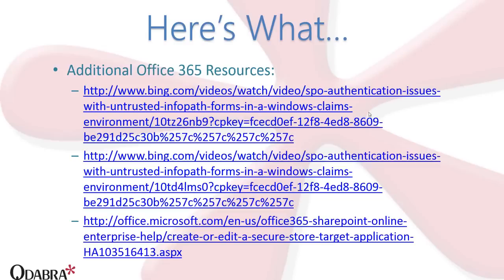Here are some additional Office 365 resources. Do complete the feedback after the webinar so you get the slides. These links cover SPO authentication issues with untrusted InfoPath forms in a Windows claims environment. There's a part one and part two video that walk through some of the same things covered here. There's also a link for creating a secure store target application in Office 365 — the steps are slightly different there than they are in on-premises.